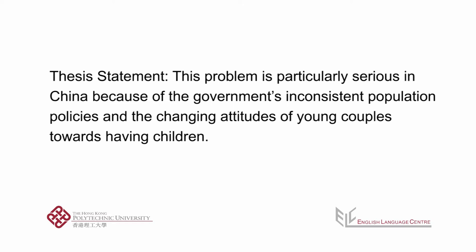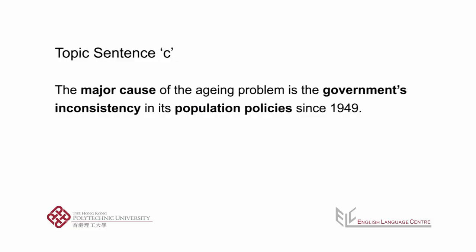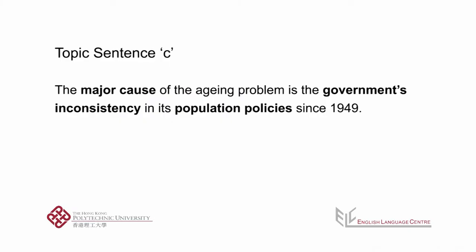This problem is particularly serious in China because of the government's inconsistent population policies and the changing attitudes of young couples towards having children. Great! It seems that C should be the right one. The idea echoes the first point mentioned in the thesis. Do you see the key phrases here? Major cause, government's inconsistency, and population policies?